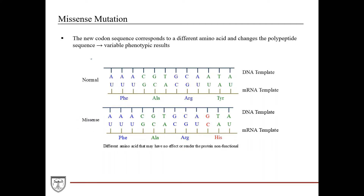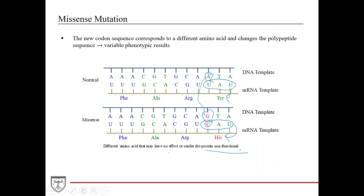With a missense mutation, this adenine is substituted for a guanine, which results in a cytosine in the mRNA — so now you have a new codon. The old codon UAU corresponded to tyrosine; now you have CAU, which corresponds to histidine. You've changed the polypeptide sequence. Depending on what amino acid is substituted and the rest of the sequence, it could render no effect or cause the protein to be non-functional.